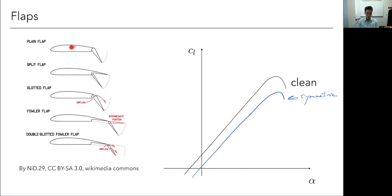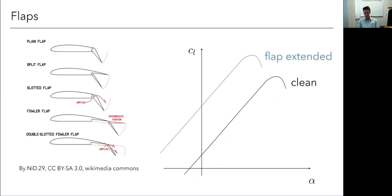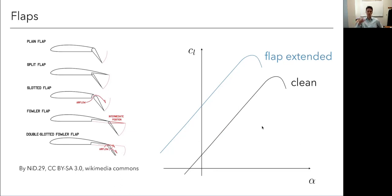With flap extended, the curve shifts to the left - I've given it more camber. This does somewhat increase CL_max, but the biggest impact is that at a given angle of attack I can get a higher CL. That is nice for takeoff because it means I don't need to rotate as much to reach the angle of attack I want, which is desirable for passenger comfort.